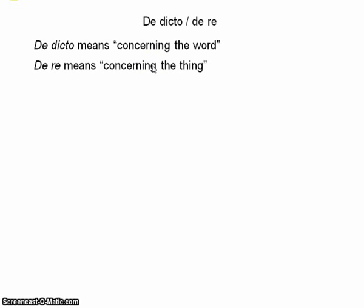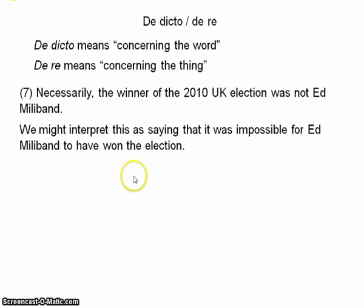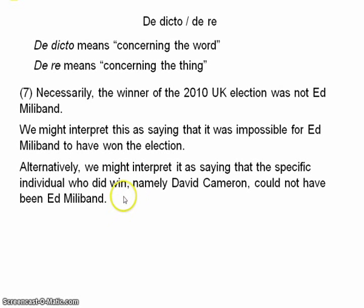Consider the statement: necessarily, the winner of the 2010 UK election was not Ed Miliband. There are two readings of this statement — one true, one false. We might interpret it as saying that it was impossible for Ed Miliband to have won the election. On the other hand, we might interpret it as saying that the actual individual who did win, namely David Cameron, could not be Ed Miliband — it's impossible for David Cameron to be Ed Miliband. The first reading here is de dicto; the second is de re. The first reading is false, but the second seems true. Surely David Cameron — the winner of the 2010 British election — could not be Ed Miliband. If David Cameron were Ed Miliband, he wouldn't be David Cameron.